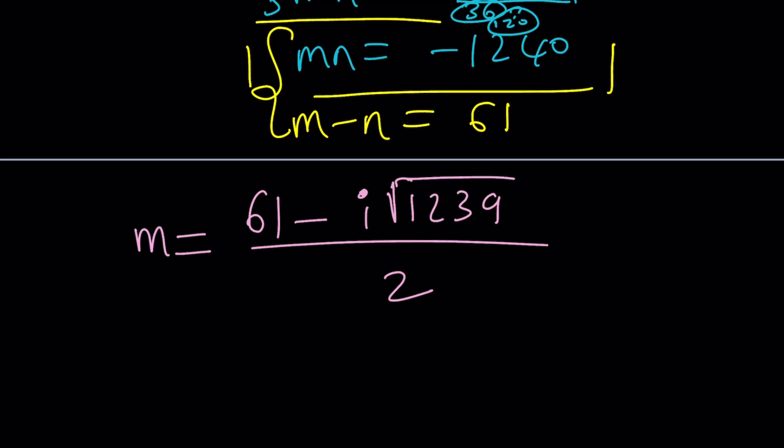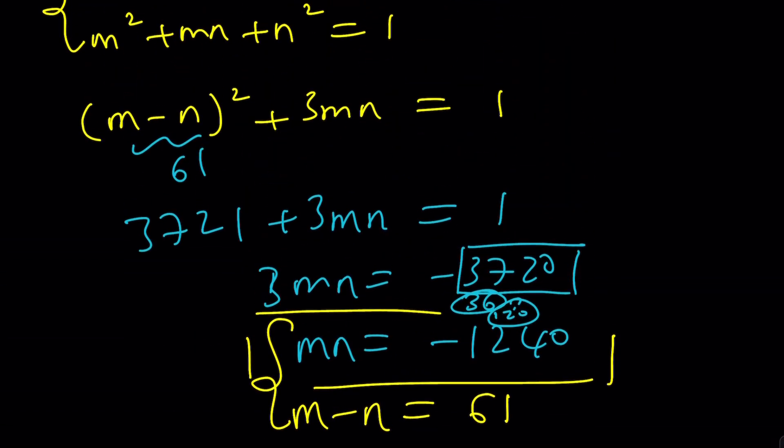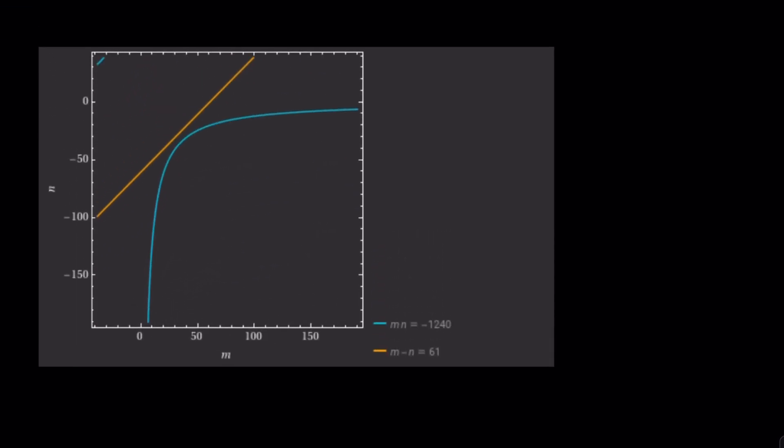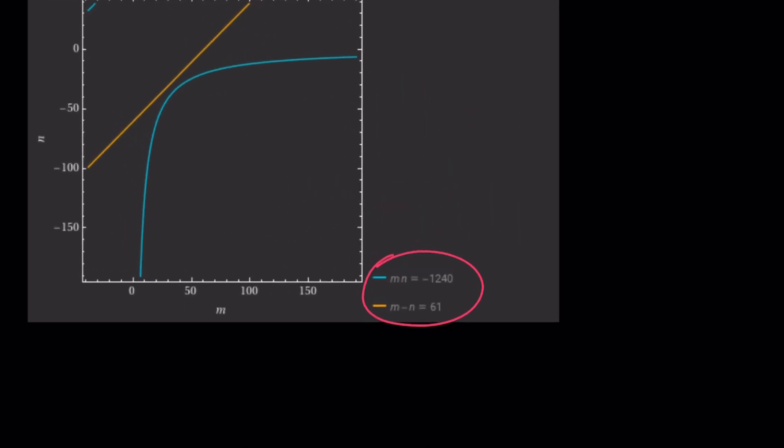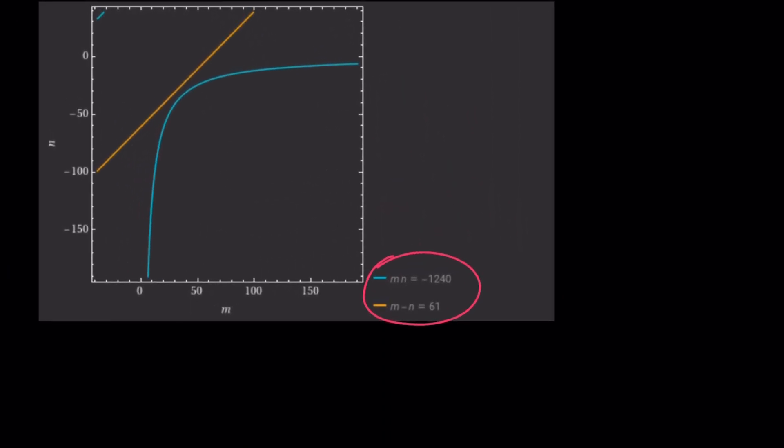And if you look at the graph of this scenario, the second one, you're going to realize something interesting. They don't intersect, which means there are no real solutions for this type of system. That's what it means. So basically, the first case gave us good solutions. The second case didn't.